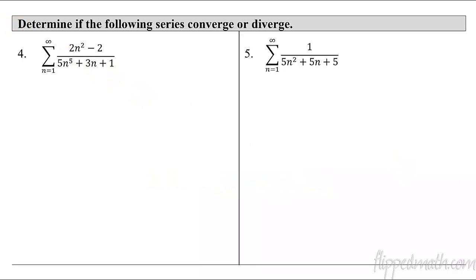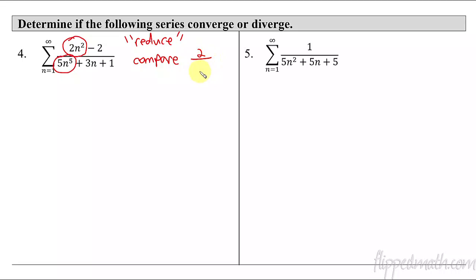So let's take an example. How do you know what to compare it to? When you have something like this, I'm going to use this idea of 'reducing' — it's not really technically reducing, but you have to think of it like horizontal asymptotes. If you were to go off forever, what would you really focus in on? You're focused on the terms that are the largest terms. So I'm going to take this and reduce it down. I'm comparing to 2 over 5n³, but really I don't even need the two-fifths — I could just say 1 over n³. This is a p-series and it converges.